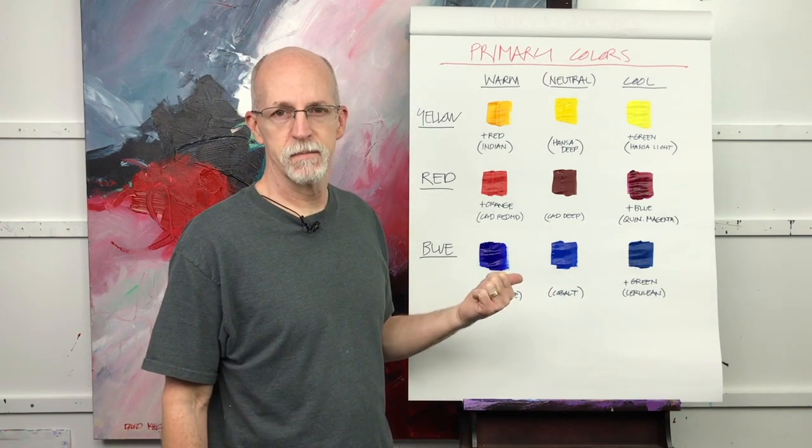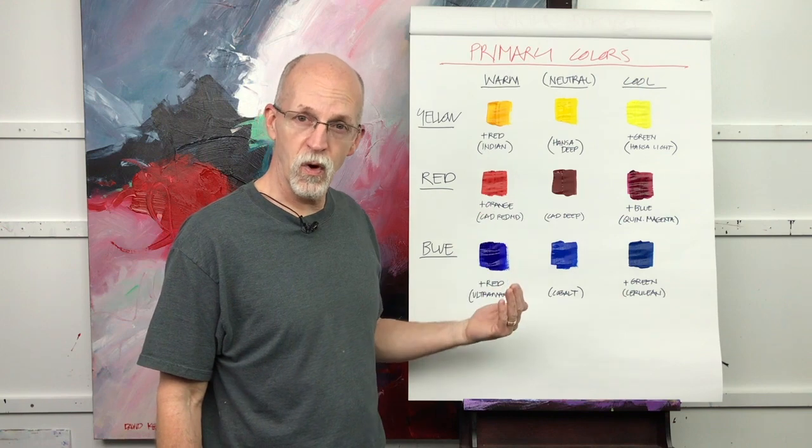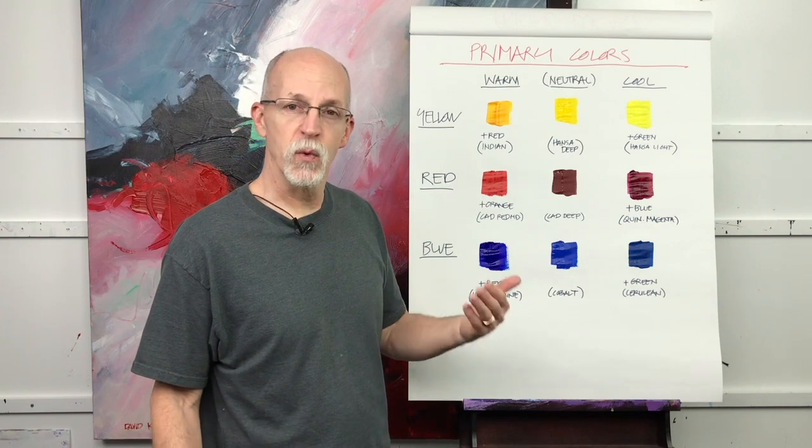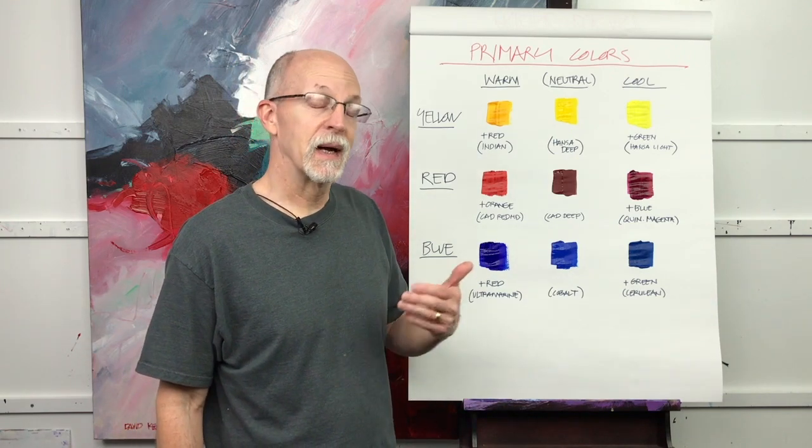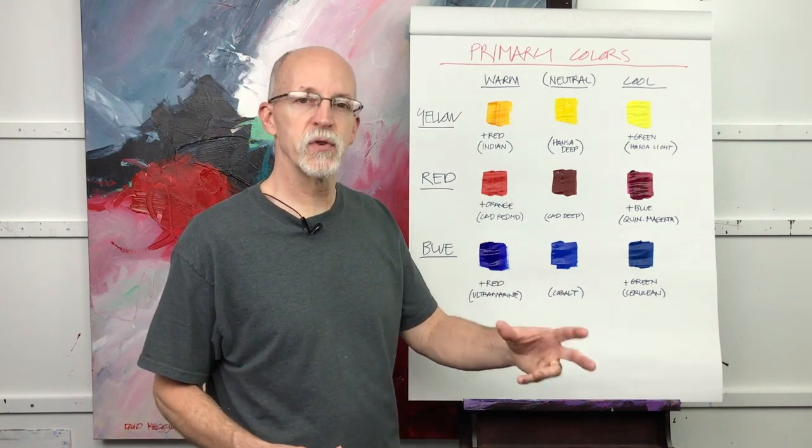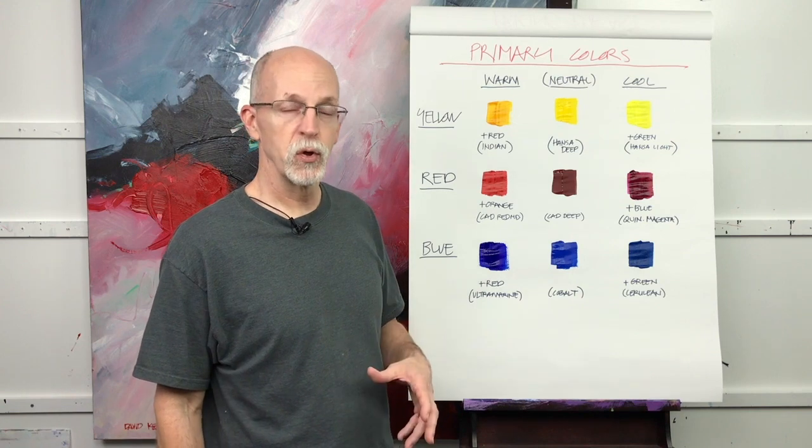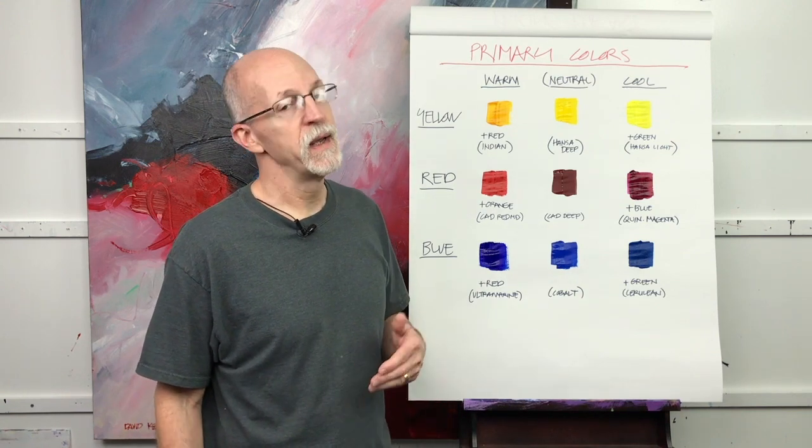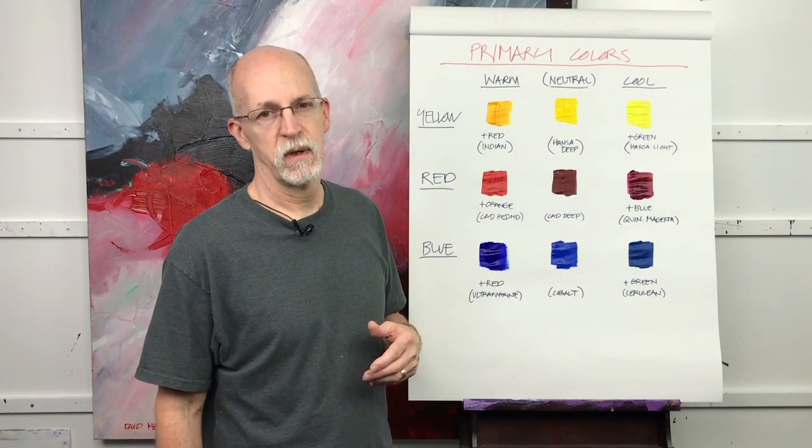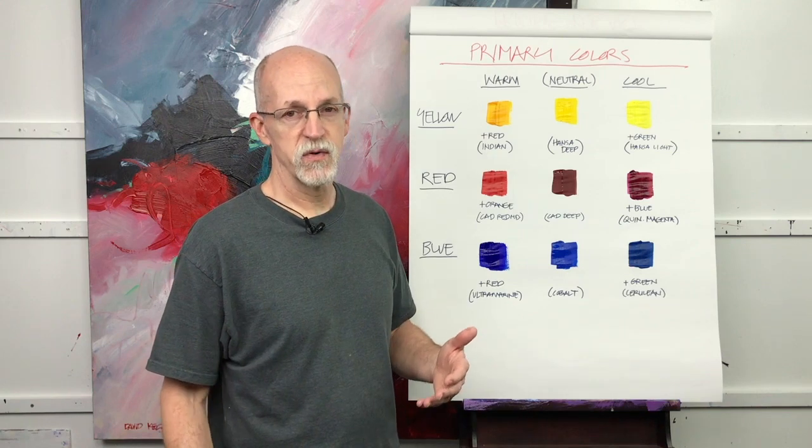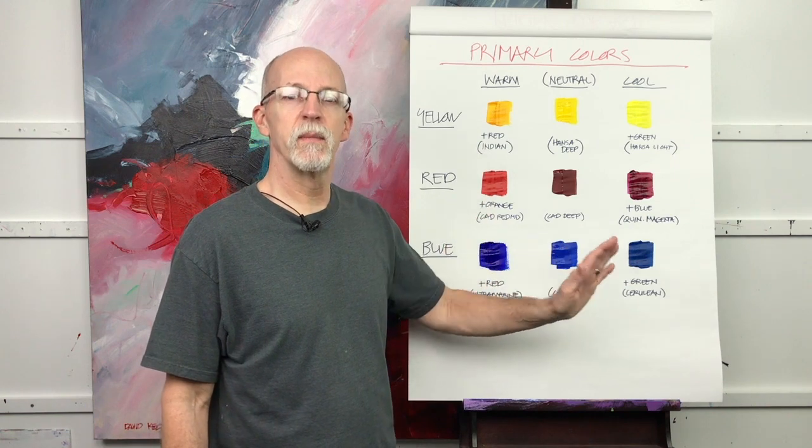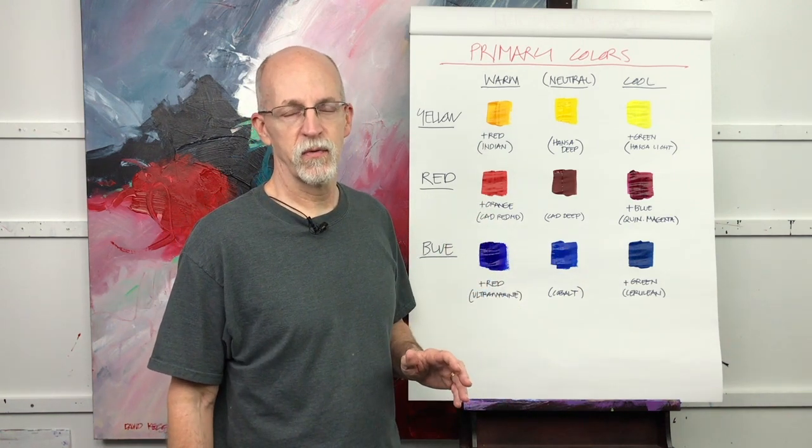What we try to teach in the workshops is about warm primaries and cool primaries. Each primary color - red, blue, and yellow - has a warm version and a cool version, and I would even go so far as to say they have a neutral version that's closer to true primary. Some manufacturers even have a primary blue, red, and yellow. I don't particularly use those colors but I have some substitutes here and we can start to look at which colors seem to be warm and which are cool.